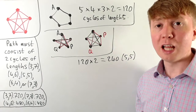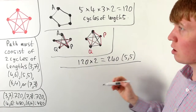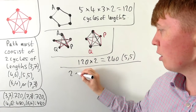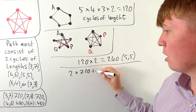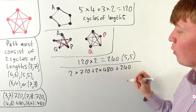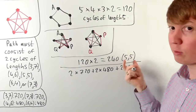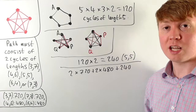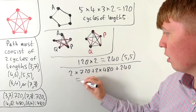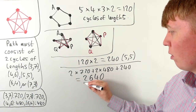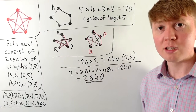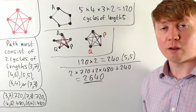So we have 120 times two equals 240 ways of doing this with a cycle of length five followed by another cycle of length five. Note we don't gain anything by swapping the two fives since it's symmetric. Our grand total is two times 720 plus two times 480 plus 240, which equals 1440 plus 960 plus 240 equals 2640 Euler cycles. So there are 2640 ways of drawing this graph without taking your pen off the page.